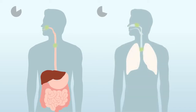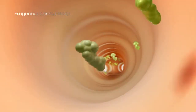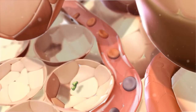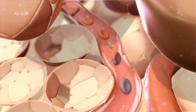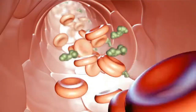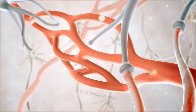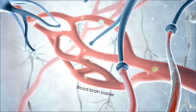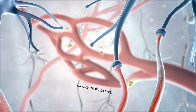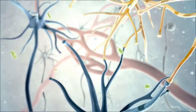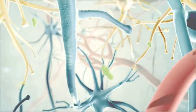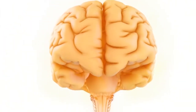The onset of action from oral administration is less rapid compared to the inhaled route. When exogenous cannabinoids are inhaled, they travel through the respiratory tract to the alveoli of the lung where they diffuse rapidly into the circulatory system. They then travel through the bloodstream towards the CNS where they diffuse across the blood-brain barrier and into the surrounding tissues of the brain and spinal cord.